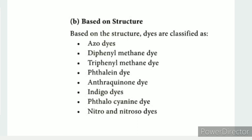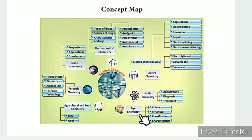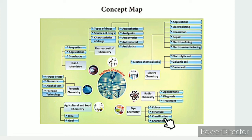Dyes can also be classified by their chemical structure. The structural types include anthraquinone dyes, indigo dyes, phthalein dyes, phthalocyanine dyes, and nitroso dyes. This covers dye chemistry - the color, structure, and classification of dyes. Thank you.